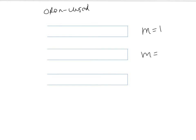For open-closed tubes, you can only have odd harmonics. So you're going to have M equals one, M equals three, and M equals five. You just need to memorize that. You can only have odd-numbered harmonics.